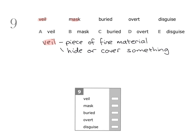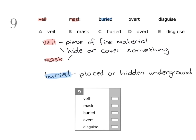Then we have the word mask, and this can go with veil because mask can mean to hide something from view. For example, if the trees mask the building, that means the trees hide the building — you can't see the building properly because of the trees.